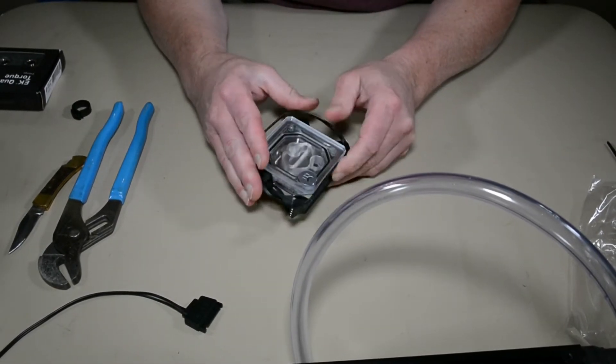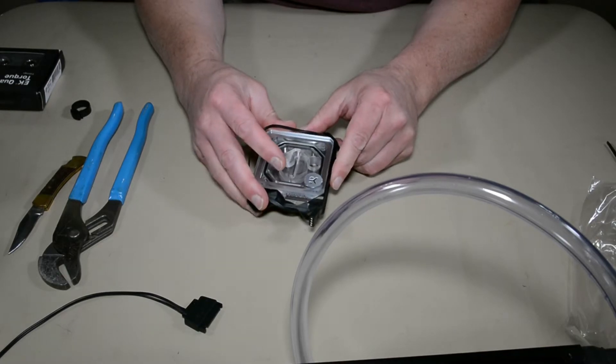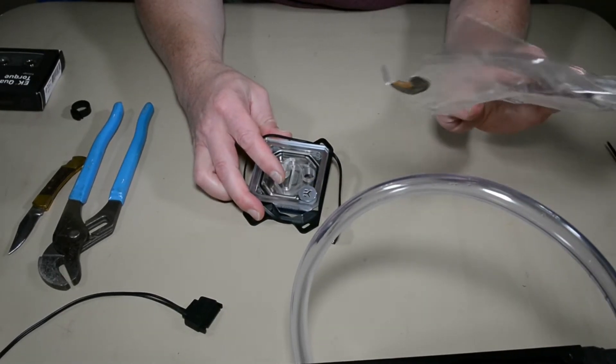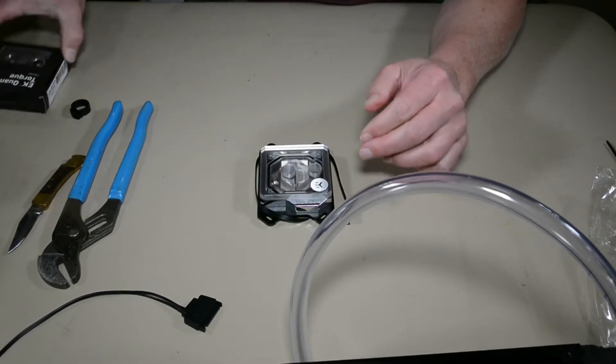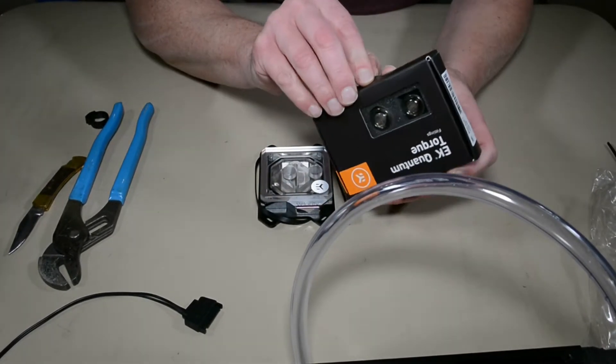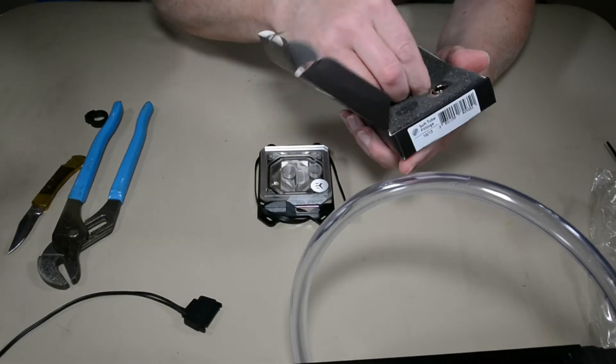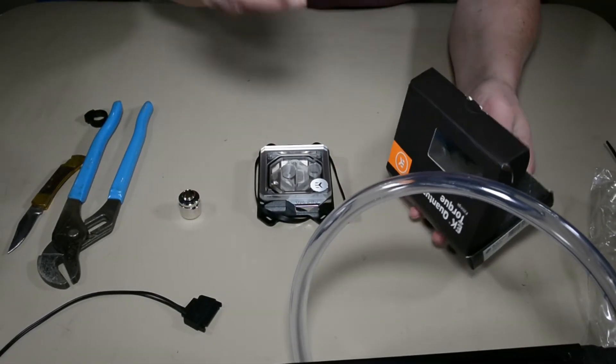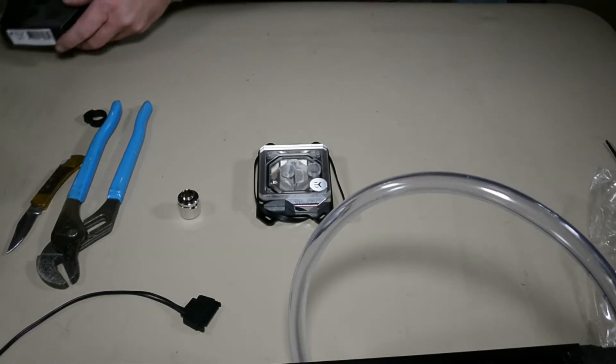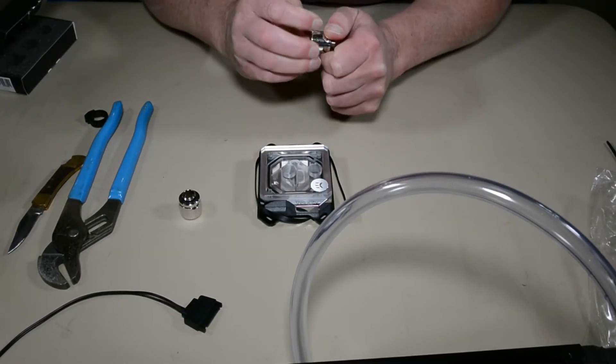So this is the EK Quantum Velocity. It's first time I've had it out of the bag as you can see. And we will get the torque compression fittings on there, put it on there and then we'll fill the loop with the necessary water.